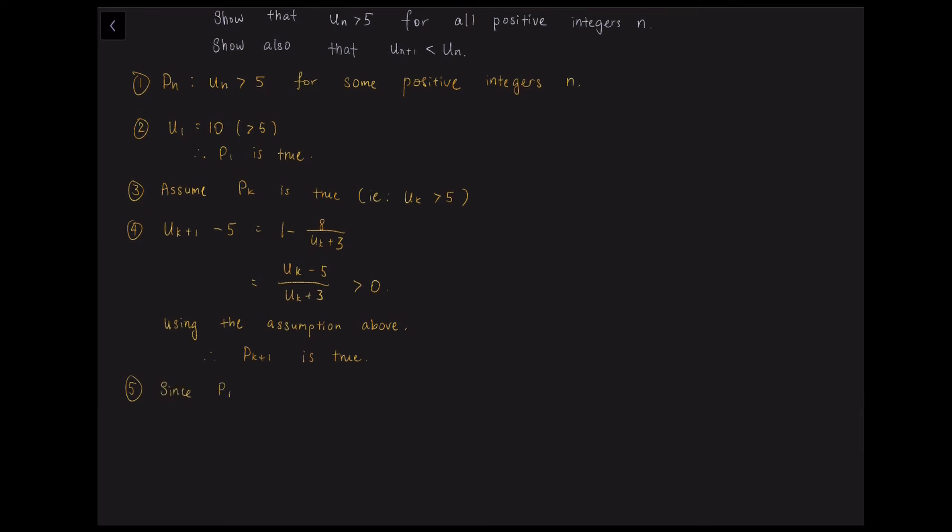So the last statement is the same again. Since p1 is true and pk is true implies pk plus 1 is true, by induction, pn is true for all positive integer n.